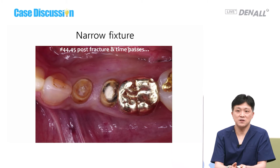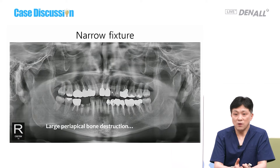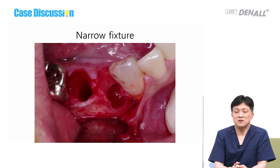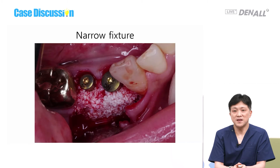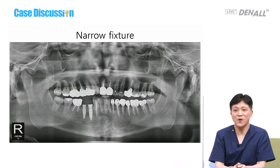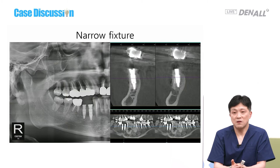The second option is using very thin fixtures. For example, numbers 44–45 post-fracture — as time passed, number 6 became mesially tilted and the periapical lesion is quite serious. Narrow fixtures were planned for this patient. Extraction is done, and 3.3 mm fixtures from another company are used with GBR.